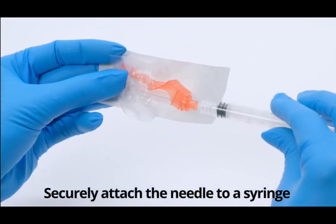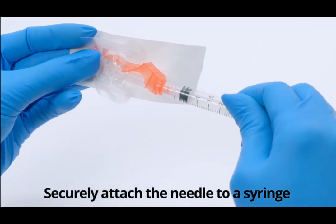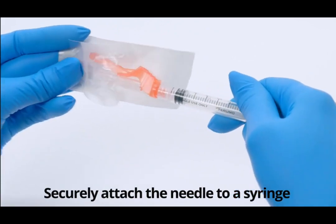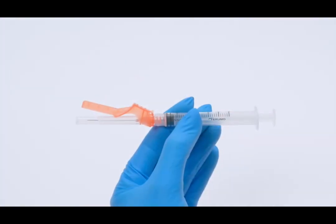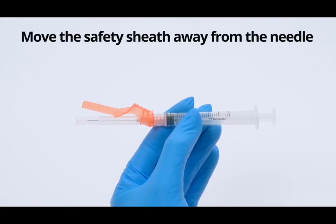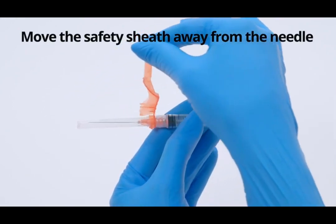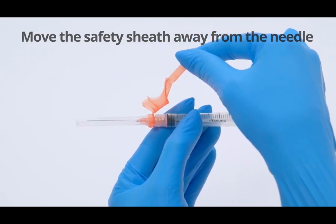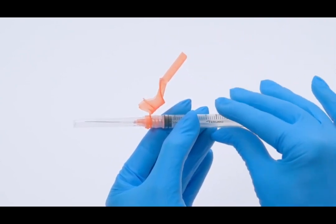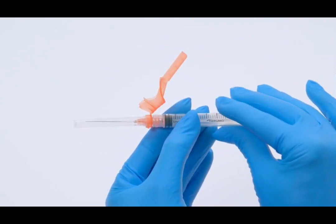Securely attach the needle to a syringe with a push and a clockwise twist motion. Prior to removing the protection cap, move the safety sheath away from the needle and toward the syringe barrel to the angle shown. The fixing mechanism will keep the safety sheath in the position you set.